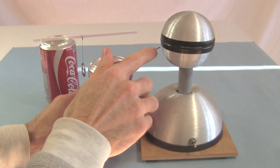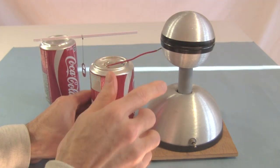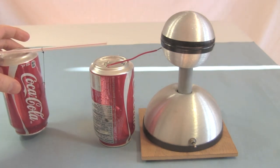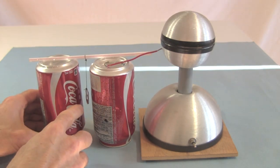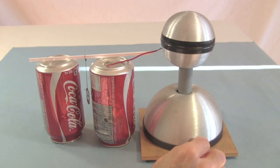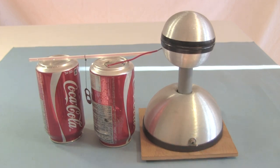Then arrange it so that this wire here is touching, or very close, to the dome of the Van de Graaff generator. Put the tab very close to both cans. And there you go.